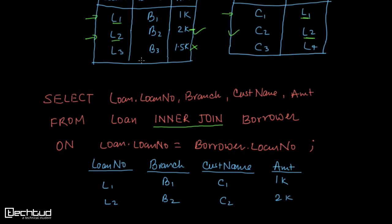Similarly, in the borrower table, which is the right table, we have C3 with loan number L4, but we don't have any entry for L4 in the left table. So this will also be discarded. In the case of inner join, we will have only these two records as output.